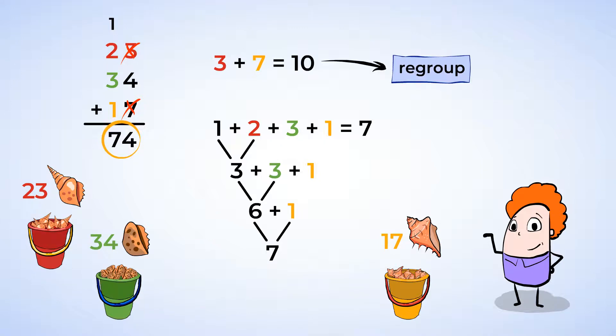Great work! 23 plus 34 plus 17 is 74. We have 74 shells in all.